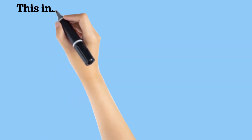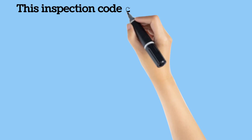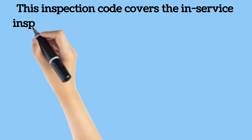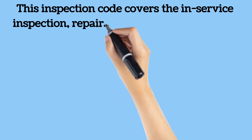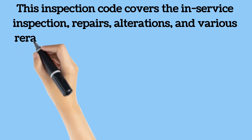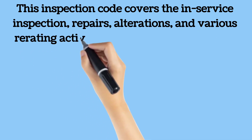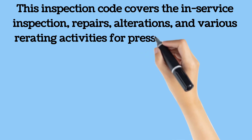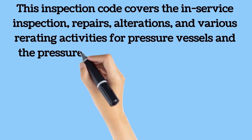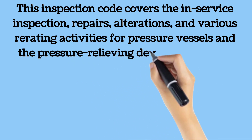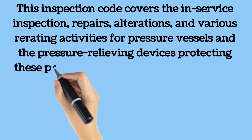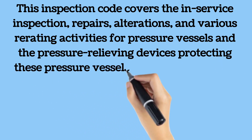API 510 inspection code covers the in-service inspection, repairs, alterations, and various re-rating activities for pressure vessels and the pressure relieving devices protecting these pressure vessels. This inspection code applies to all hydrocarbon and chemical process vessels that have been placed in service unless specifically excluded per 1.2.2.2 of the main 510 code book. It could also be applied to process vessels in other industries at owner-user discretion. API 510 certification is valid for a three-year term and is accredited by the American National Standards Institute, ANSI.